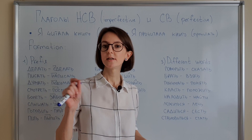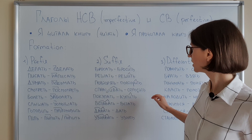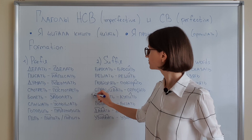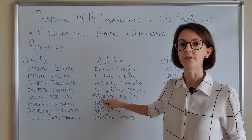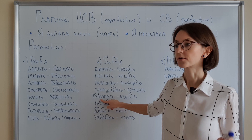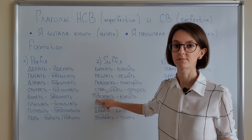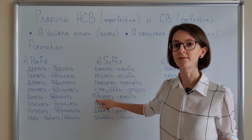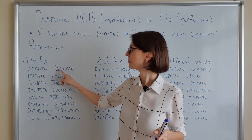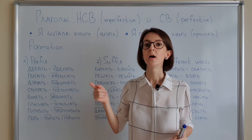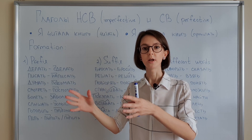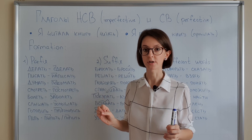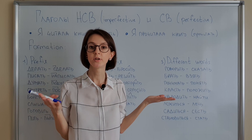But there is a little remark with prefixes. Look at покупать → купить. In this case the imperfective verb (NSV) was also created with a prefix. So if you see a prefix, you might think right away that it's probably SV — but that's not always the case. That's why it's necessary to remember verbs in pairs. Every time you see a verb, check: is it NSV or SV? And write down the other form. So right away you have two forms. This is very important.